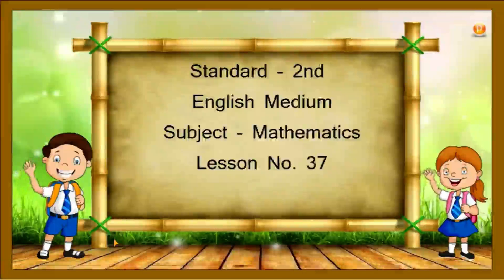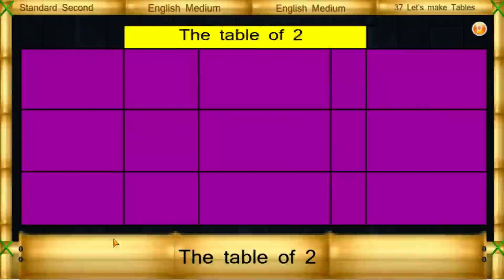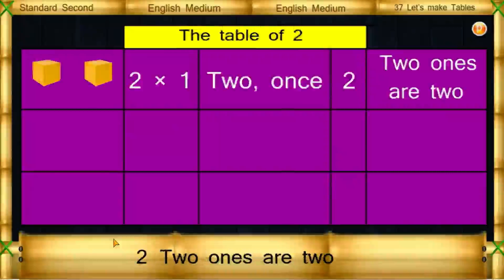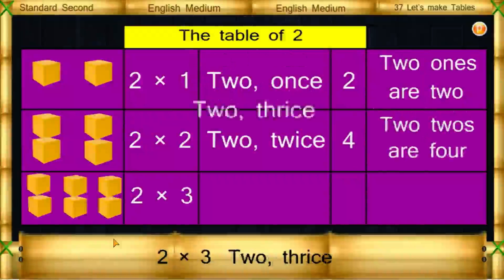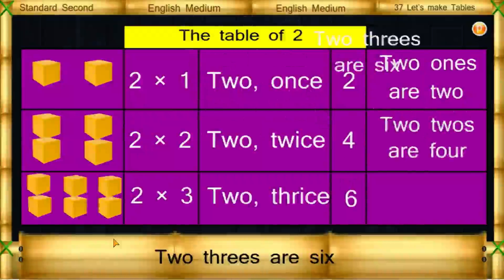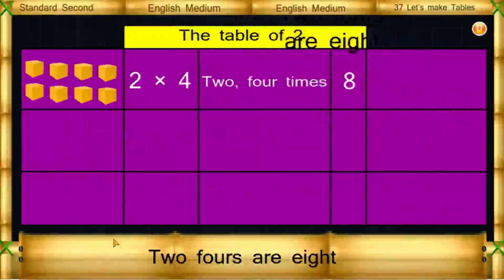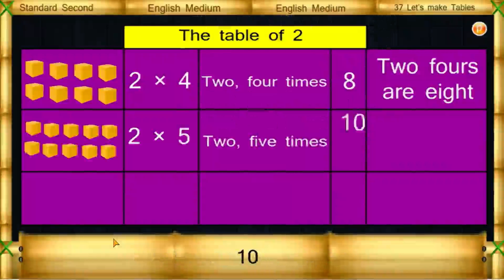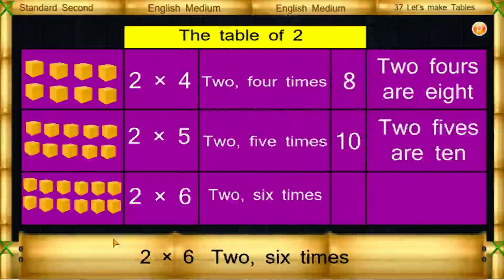The Table of 2. 2 1's are 2. 2 2's are 4. 2 3's are 6. 2 4's are 8. 2 5's are 10. 2 6's are 12.